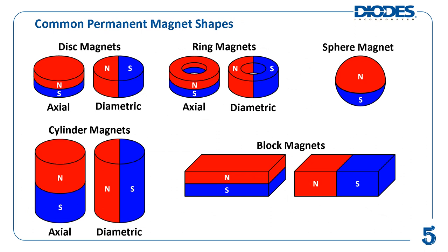Permanent magnets come in many different shapes and sizes. Some common magnet shapes are the disc, cylinder, ring, block, and sphere. Permanent magnets can be created with many different magnetization directions, a concept which makes the most sense when discussing the disc, cylinder, and ring shapes.